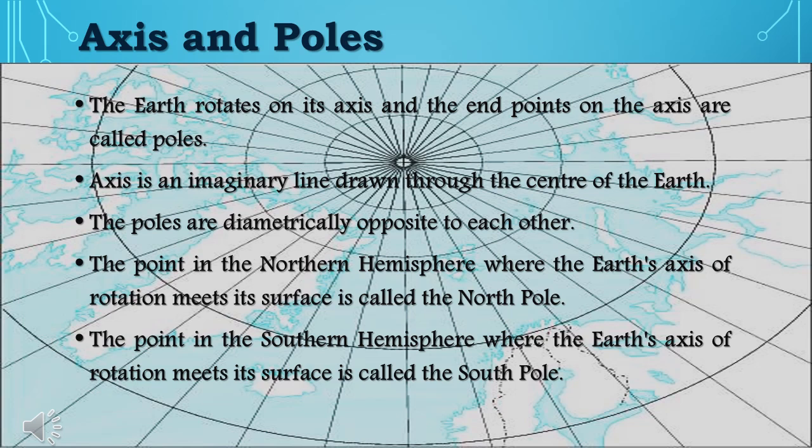The point in the northern hemisphere where the earth's axis of rotation meets its surface is called the north pole. The point in the southern hemisphere where the earth's axis of rotation meets its surface is called the south pole.